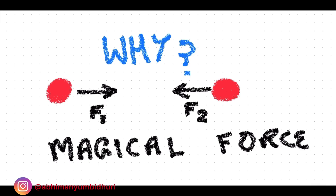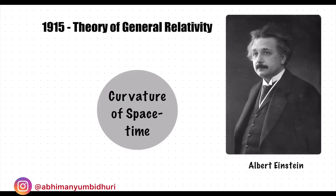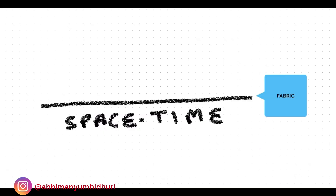In fact, he only described it as a magical force. Albert Einstein, in his theory of general relativity, tries to explain the existence of gravity. Instead of being a magical force, it has been described as the curvature of space-time.